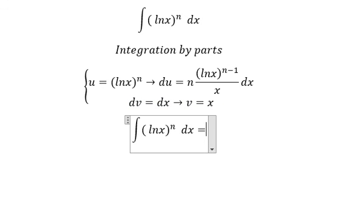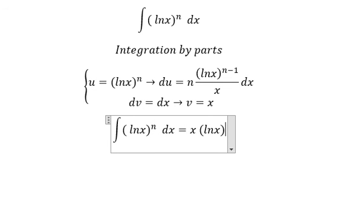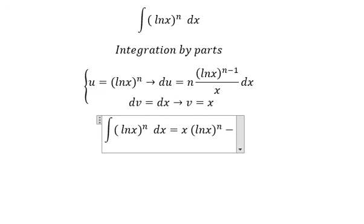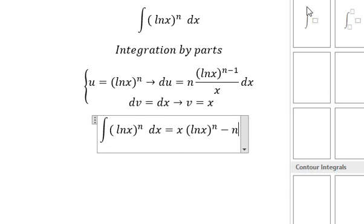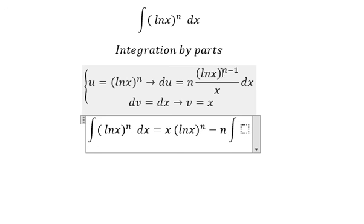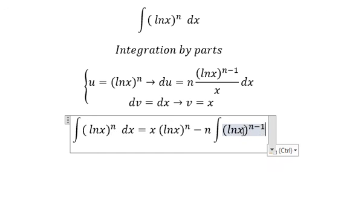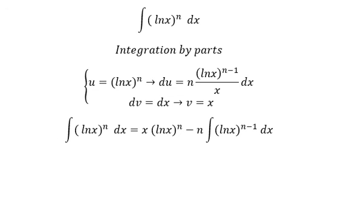So we have u multiplied by v minus the integral of v du. So x divided by x, we simplify, so we have n and we have the integration. This one in here, we put in here dx. This is the end, thank you for watching.